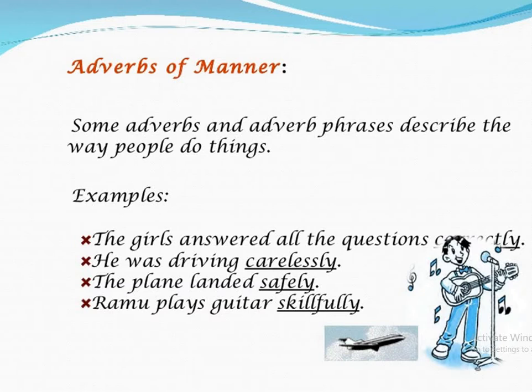The girls answered all the questions correctly. How were the questions answered? Correctly. Next example: he was driving carelessly. How was he driving? Carelessly — here carelessly describes how the work was being done. The plane landed safely — safely is the adverb of manner, telling us how the plane landed. Ramu plays guitar skillfully — here again the adverb describes the way Ramu plays the guitar. This was adverbs of manner.